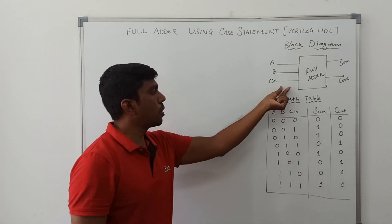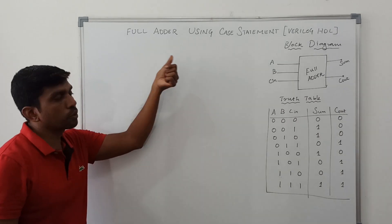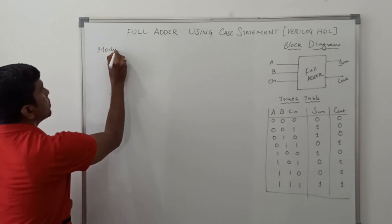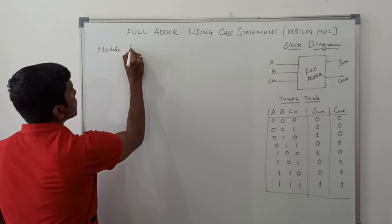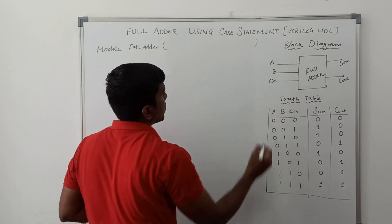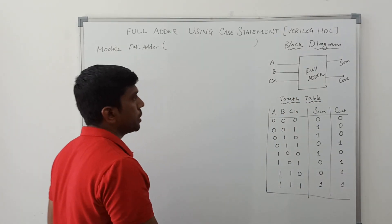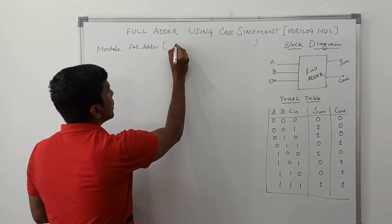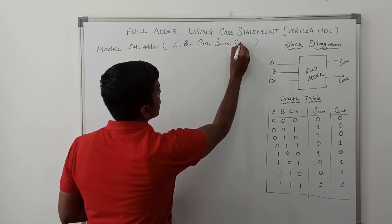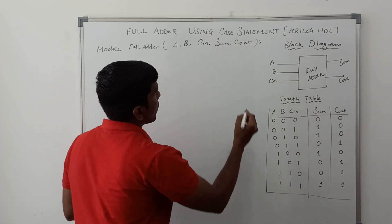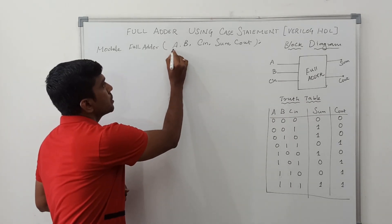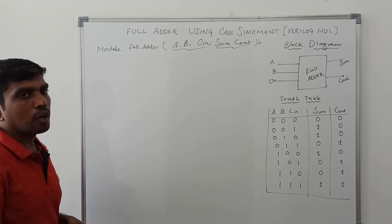Using this block diagram and truth table we can write the Verilog code for the full adder circuit using the case statement. Now I start to write the program. Module, then module name: full adder. Within the bracket you list all variables used in the block diagram — we have 5 variables: A, B, Cin, Sum, and Cout. Among these 5 variables, 3 are input variables and 2 are output variables.